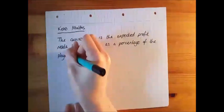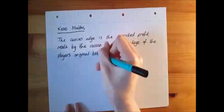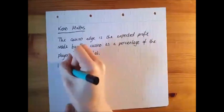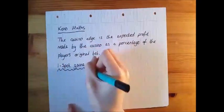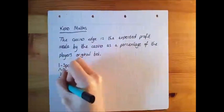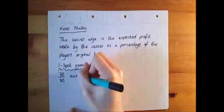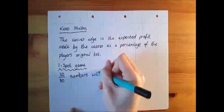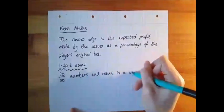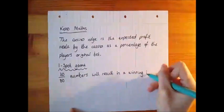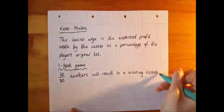We will begin by calculating the odds of winning a one-spot game. Out of the 80 available numbers, 20 of these will result in a winning ticket. The probability of winning is therefore 20 divided by 80, which is equal to a quarter.